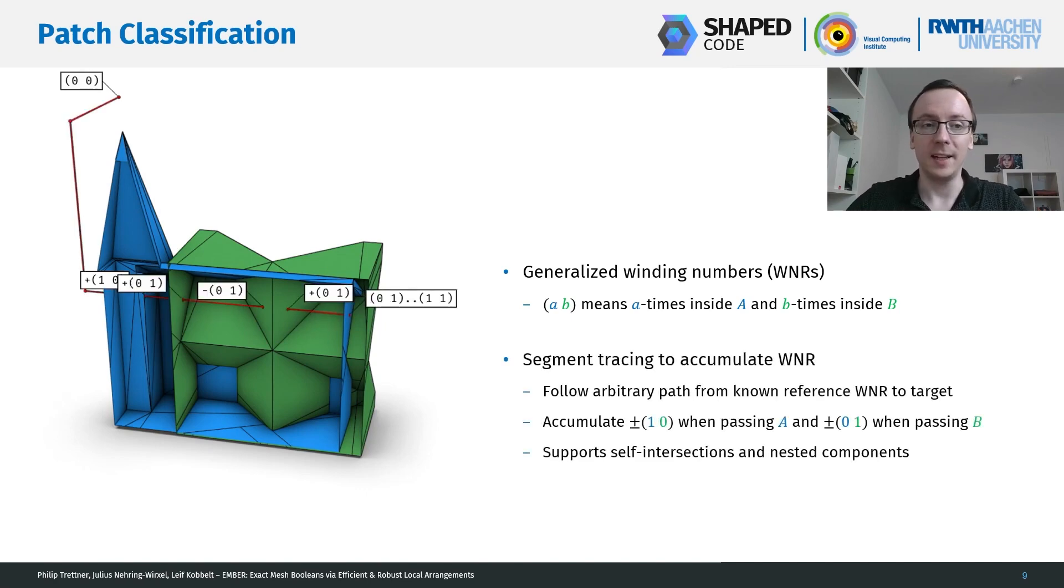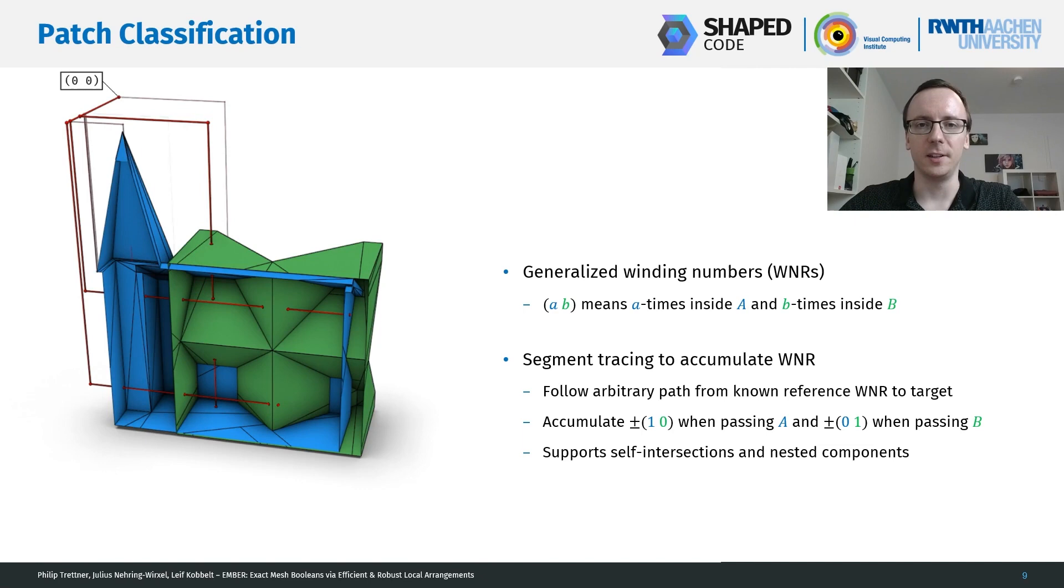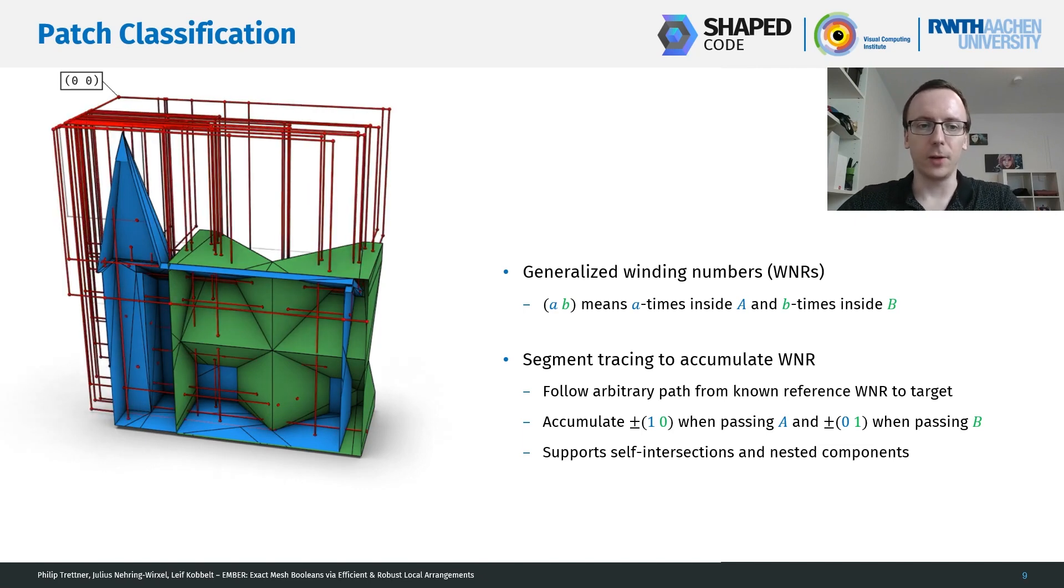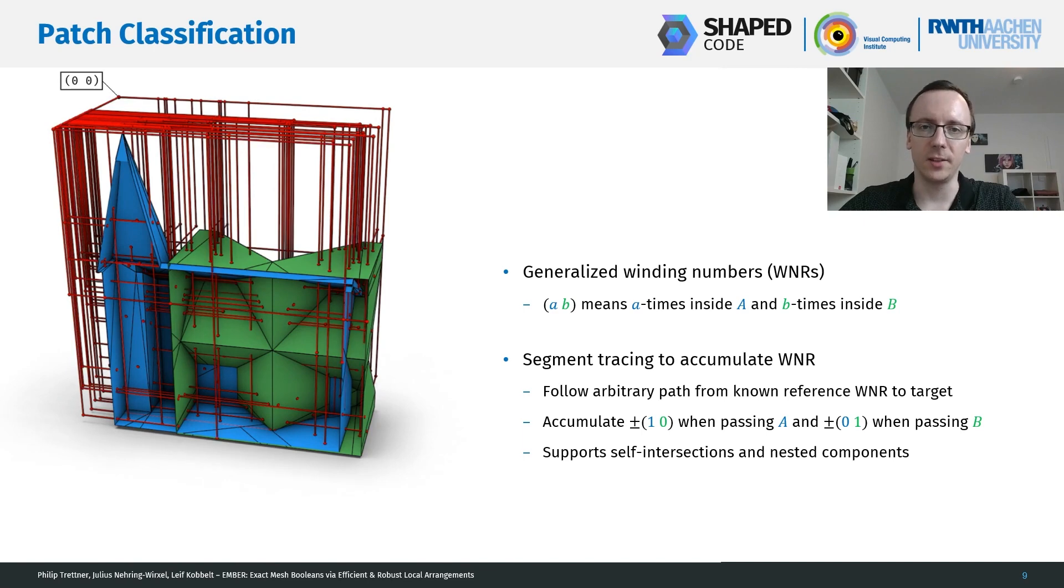Now, if we want to classify some patch and we have a known reference number at some position, we can just trace an arbitrary path from the patch to our known position. Each time we're crossing the blue mesh, we accumulate (1, 0). And each time we're crossing the green mesh, we are accumulating (0, 1). And the sign of the accumulation depends on the direction of the path and the segment. We continue to do this for every patch that we got after intersecting. And this framework neatly supports all self-intersection and nested components and other more challenging cases.